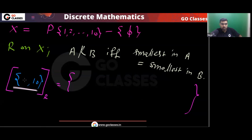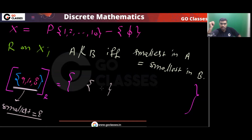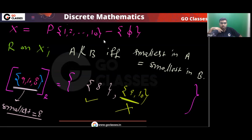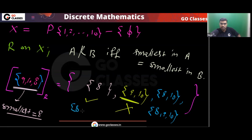Now let's find the equivalence class of {9,10,8}. Here the smallest is 8. Can I include {9,10}? No — its minimum is 9, not 8. Can I include {8,10}? Yes. {8,9,10}? Yes. {8,9}? Yes. So all subsets with minimum exactly 8 belong to this equivalence class.